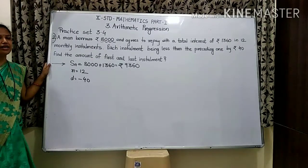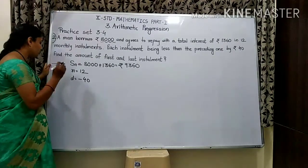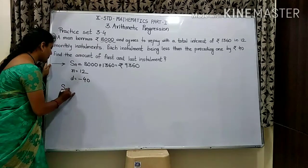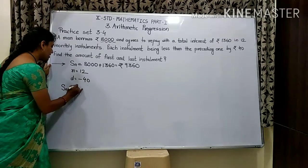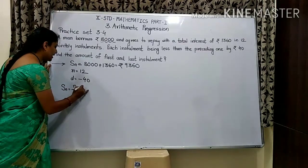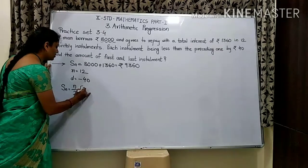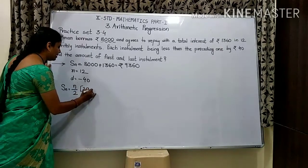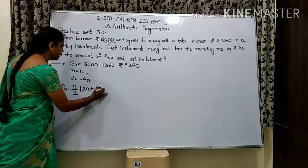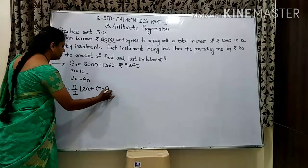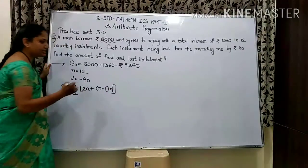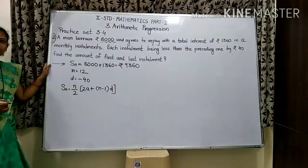To find the least (last) installment value, we use the sum formula for an arithmetic progression: Sn = n/2 × (2a + (n−1)d).